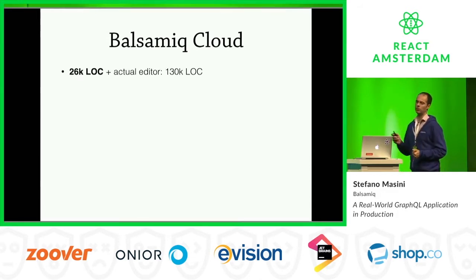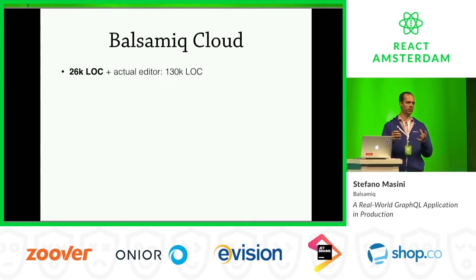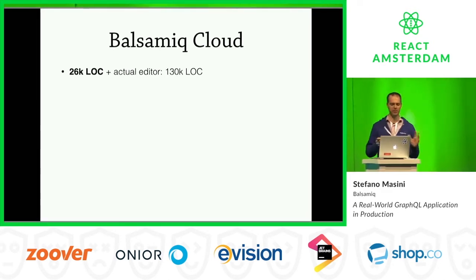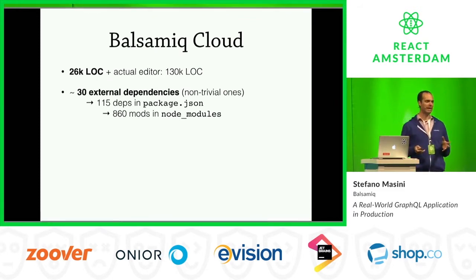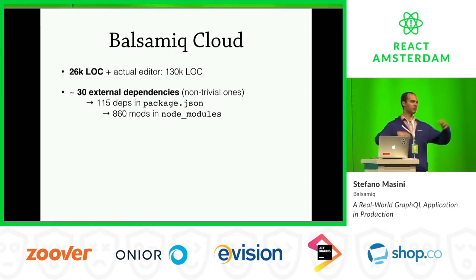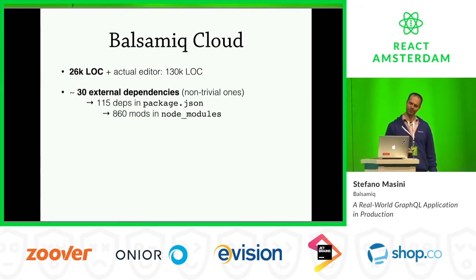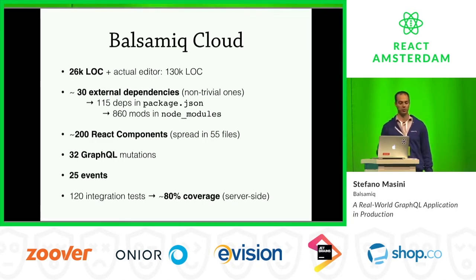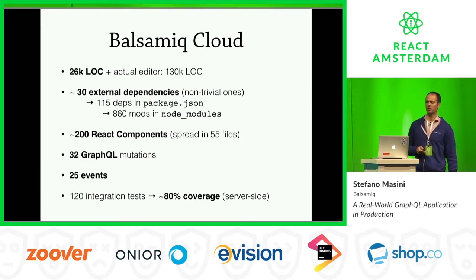Just to give you a few numbers: we're talking about 26,000 lines of code. The actual editor — the thing you use for editing mockups — is 130K. There are about 30 external dependencies providing features we really needed, but we ended up listing 150 modules in package.json, which blows up to 860 modules when you install in node_modules. That's the world we live in. We have 200 React components spread around 50 files, 32 GraphQL mutations — 32 different ways you can change data on the server — 25 events, and about 80% coverage of the server-side code with 120 integration tests.